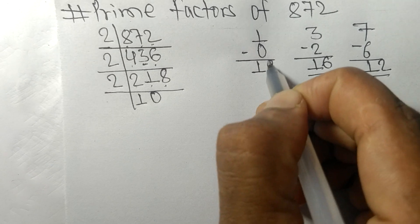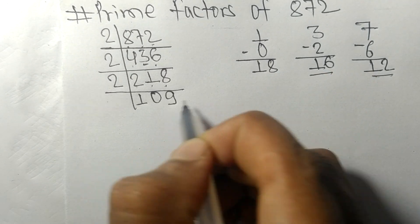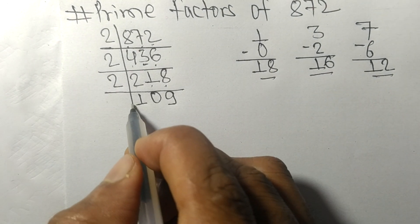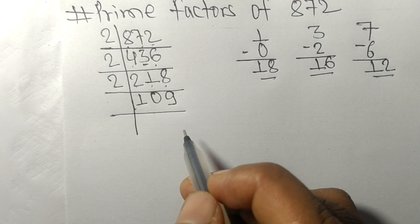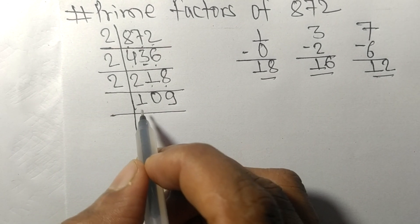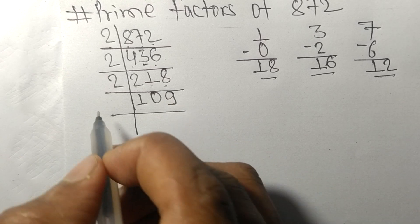And this 8 becomes 18. 2 times 9 is 18. So now we got 109 which is a prime number, so it is exactly divisible by 109 only.